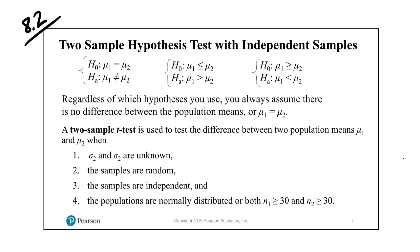Here are the three different varieties of hypothesis tests we could be doing with two independent samples. In the first case, the null hypothesis is that μ1 equals μ2, or that their difference is zero. The alternative is that μ1 is not equal to μ2. The equals case is in the null hypothesis and the not-equals case is in the alternative. This would be our two-tail version.